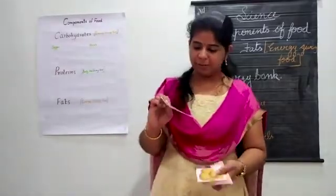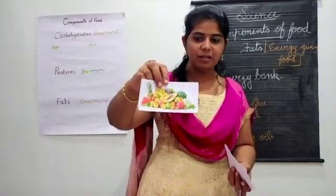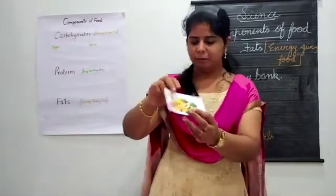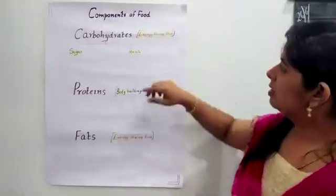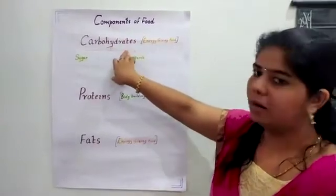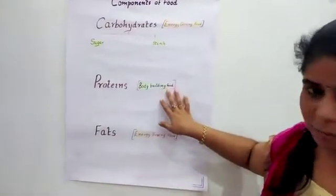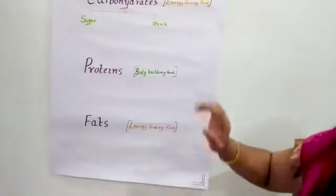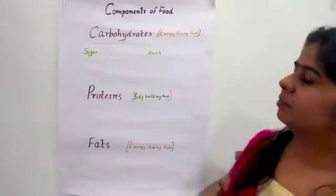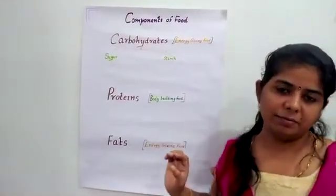My first picture — you can see here there are all types of fruits given. Before that, I will show you the chart. You can see here the components of food, the different nutrients: carbohydrates, which is energy-giving food — sugar and starch; proteins, which is body-building food; and fats. We are going to stick each picture under which nutrient it belongs to.